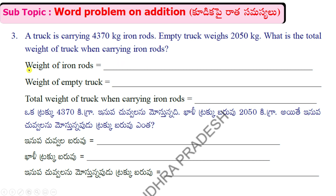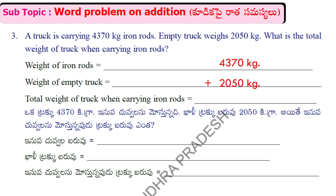Weight of iron rods is equal to 4,370 kg. Weight of empty truck is equal to 2,050 kg. Total weight of truck when carrying iron rods — total weight of truck is equal to 3,050 kg.